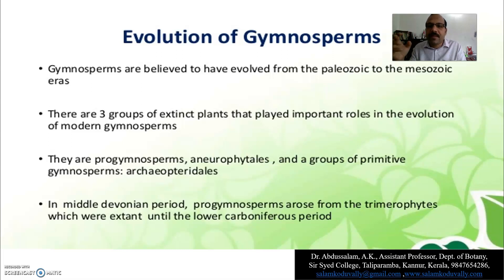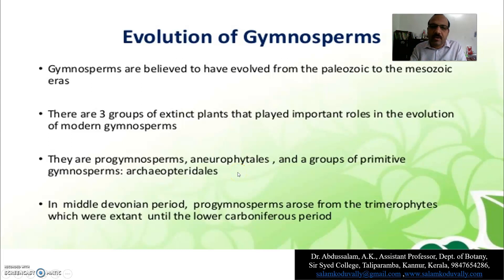Gymnosperms are very important in evolutionary terms. In the Middle Devonian period — one of the ecologically important periods — pro-gymnosperms arose from the trimerophytes, which were extinct until the lower Carboniferous period.